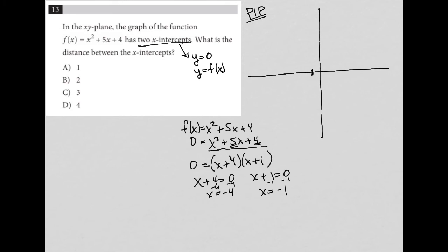So I have an x-intercept at -1, and I have one at -4. The question wants to know what is the distance between the x-intercepts. How far is it from here to here? That is a distance of 3. So the solution to this question is answer choice C.